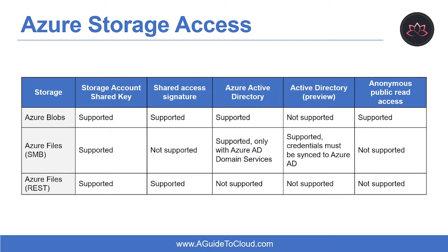Every request made against a secured resource in the blob, file, queue, or table service must be authorized. Authorization ensures that resources in your storage account are accessible only when you want them to be, and only to those users or applications to whom you grant access. The first authorization option is Azure AD — Azure storage provides integration with Azure Active Directory for identity-based authorization of requests to blob and queue services.